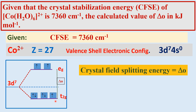The T2g orbitals are lowered in energy. The Eg orbitals — Dz² and Dx²-y² — point directly toward the crystal field and are therefore raised above the barycenter. The energy gap between them is Δ₀, the crystal field splitting energy.